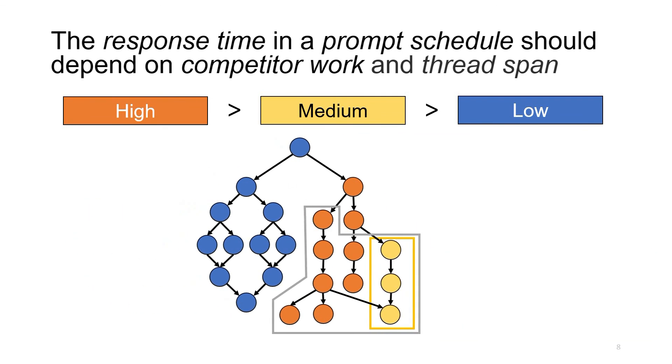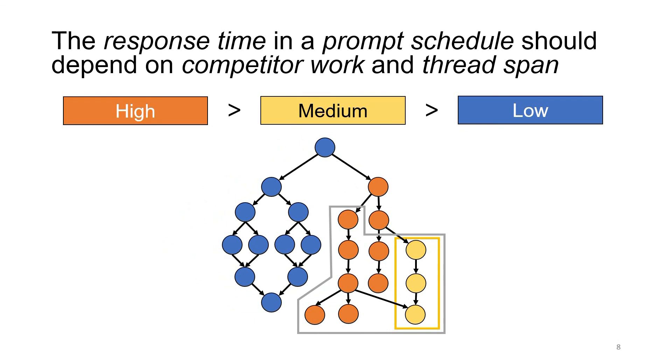In addition to just the amount of work, bounds on execution times of parallel programs also depend on the length of the critical path, the longest chain of dependencies, often called the span. Because futures can create complex dependency graphs, the critical path of a future may extend beyond the future itself. For example, these red edges make up the critical path of the medium-priority thread outlined in gold. We'll call this the thread's span.